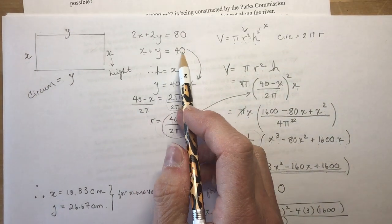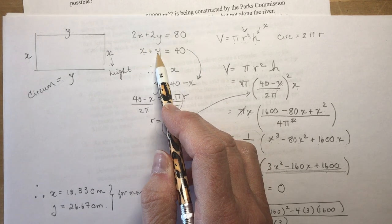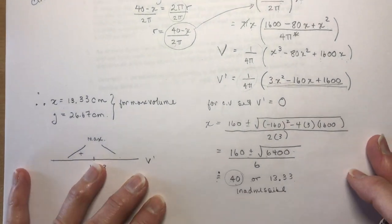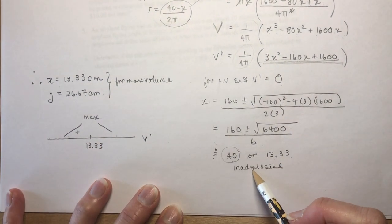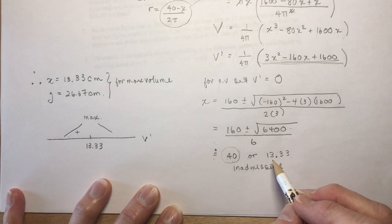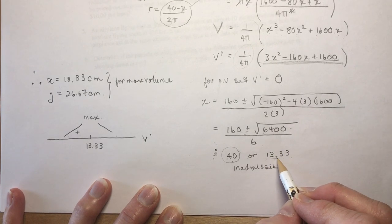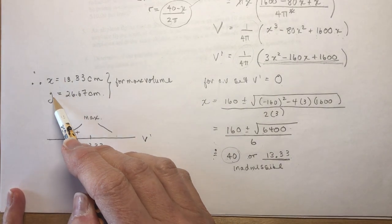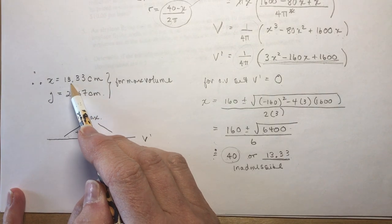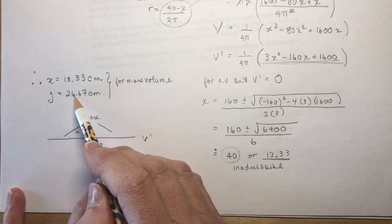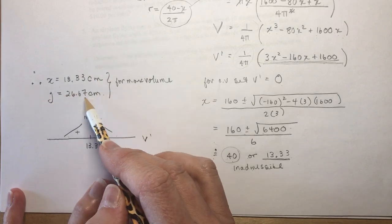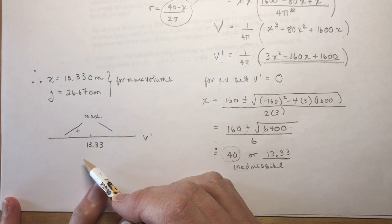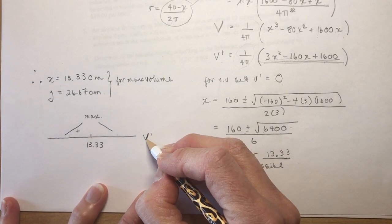Now as you know, it can't be 40 because my equation up here says that X plus Y has to be equal to 40. And if X was 40, then Y would be zero and we wouldn't have a rectangle to make a cylinder out of. So you must declare that that value is inadmissible. So I said X had to be 13.33 centimeters, so I've put that over here. And then Y is going to be equal to 40 minus this, which is 26.67. So a nice concluding statement: X is this, Y is that, for maximum value.